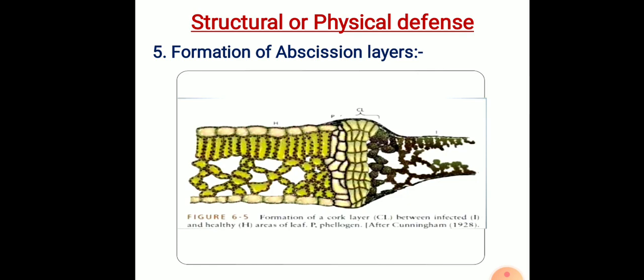The fifth structural defense mechanism is the formation of abscission layers. An abscission layer is another mechanism by which invasion by a pathogen can be limited. A band of cells develops around the infected area and extends from the upper to lower epidermis. The cell wall and the middle lamella break down so that there is no longer any connection between the infected and healthy tissues. The centrally infected tissue falls out, giving the classical shot-hole symptom, which is very common in fruit and leaf infections.